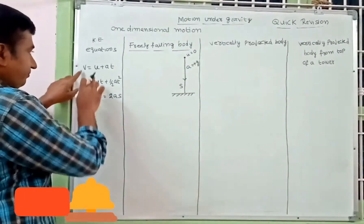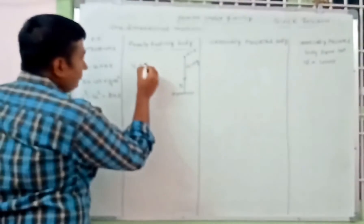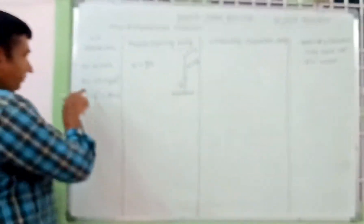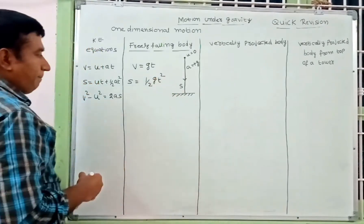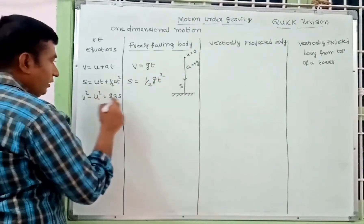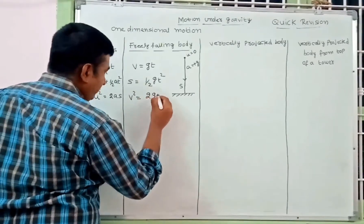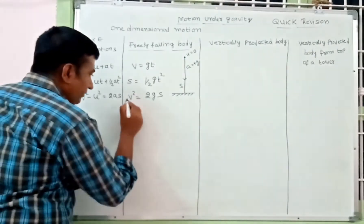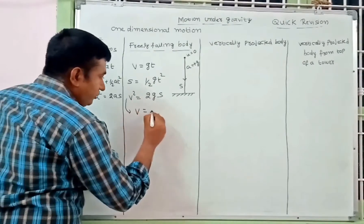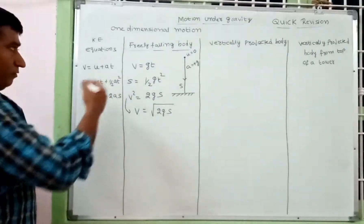With initial velocity u = 0, substituting into the kinematic equations: from the first equation, v = gt. From the second equation, s = ½gt². From the third equation, v² = 2gs, so we can also write v = √(2gs).